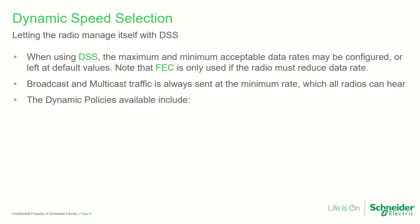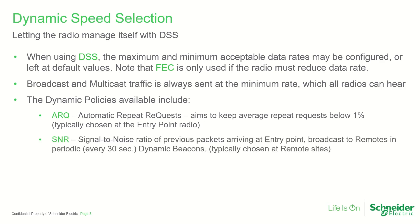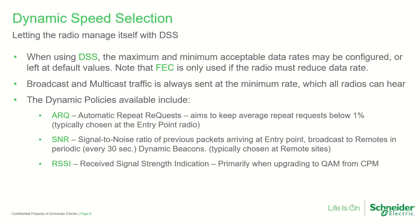The dynamic policy options used to select a radio's current data rate include: monitoring the number of ARQ repeats required, aiming to keep the average number of repeats below 1%; monitoring the signal-to-noise ratio of the link as measured by the dynamic beacon master, which broadcasts this value to remotes every 30 seconds; and monitoring the received signal strength, which is most commonly useful when upgrading an existing system from CPM modulation to QAM to minimize configuration changes required.